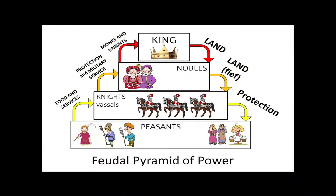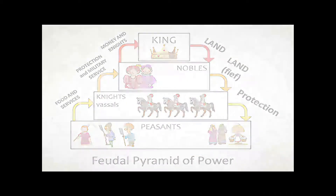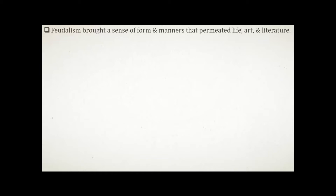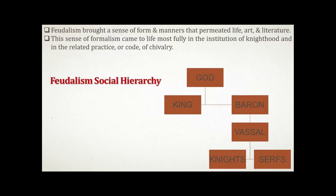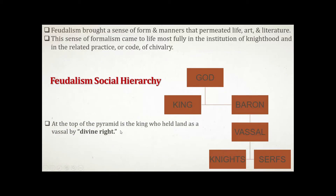Through this depiction we can understand how the system worked. Feudalism brought a sense of form and manners that permeated life, art, and literature. This sense of formalism came to life most fully in the institution of knighthood and in the related practice, or code, of chivalry. Here we can see feudalism's religious and social hierarchy.